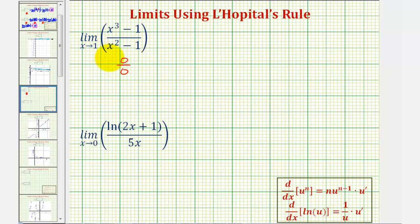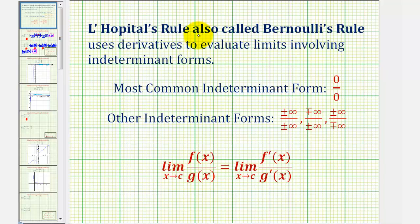Because of this indeterminate form, we can apply L'Hôpital's rule — also called Bernoulli's rule — to help us determine this limit. L'Hôpital's rule tells us that if a limit has one of these indeterminate forms, the limit as x approaches c of f(x) divided by g(x) is equal to the limit as x approaches c of f′(x) divided by g′(x). So if this limit fits one of these forms, we can find the derivative of f, the derivative of g, and see if we can determine this limit.